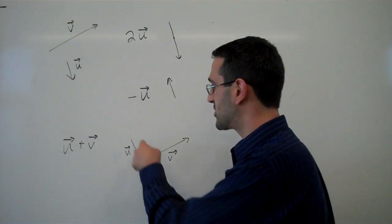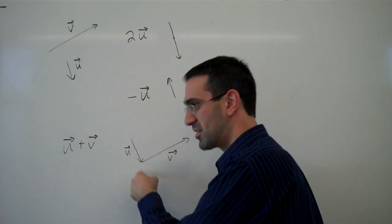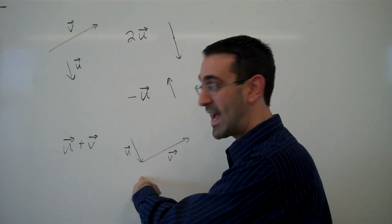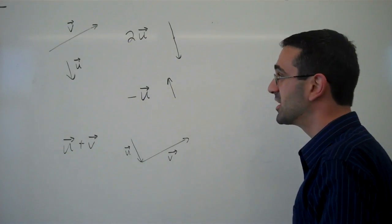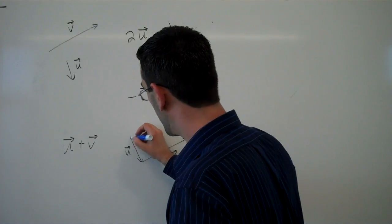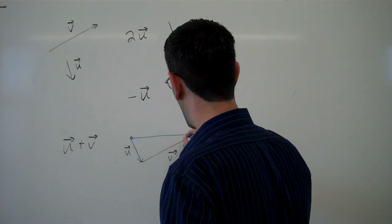The idea here is you can think of them as movements, like displacements. I start at home, I walk along the vector u, and then after that I add to that a movement along vector v. And the resulting movement puts me from my home to where I ended up, and that's the vector u plus v.